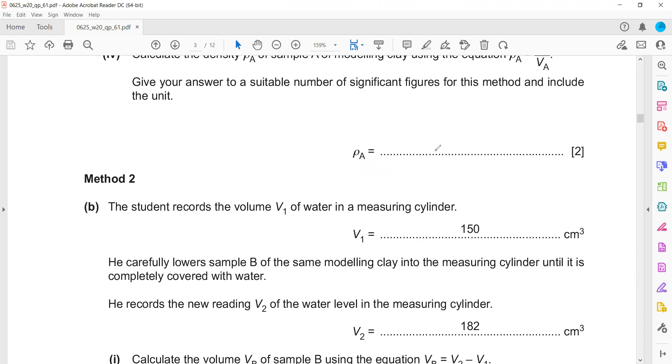The units are always important – worth two marks – because the units of 1.89 are grams per centimeter cubed.